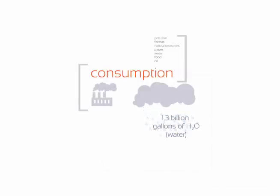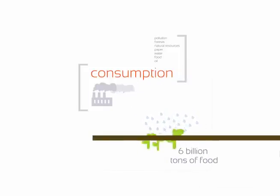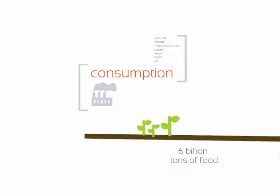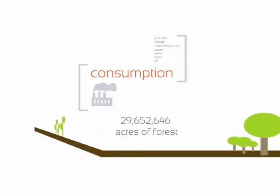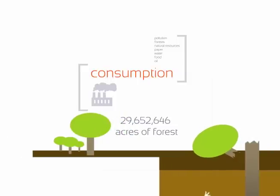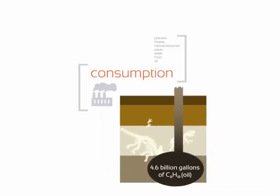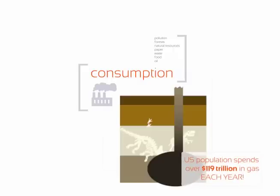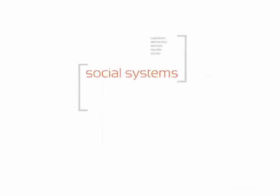Consumption: with all of these people, we emit over 26 billion tons of CO2 carbon dioxide, use over 1.3 billion gallons of water, produce over 6 billion tons of food, and chop down 29 million 652 thousand 646 acres of forest each year alone. In addition to the outrageous amounts of resources we use from the earth, we pump 4.6 billion gallons of oil each year — over 12 million gallons per day.